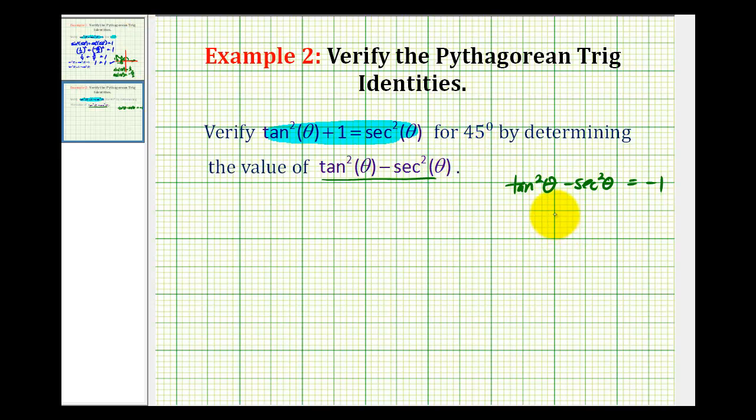We can do that by using a 45-45-90 right triangle, where the relationship among the three sides would be 1, 1, √2, and here's one of the 45-degree angles. So tan(45°) equals the ratio of the opposite side to the adjacent side, that's equal to 1, and sec(45°) would be the ratio of the hypotenuse to the adjacent side. Remember, it's a reciprocal of the cosine function, so that would be √2/1, or just √2.